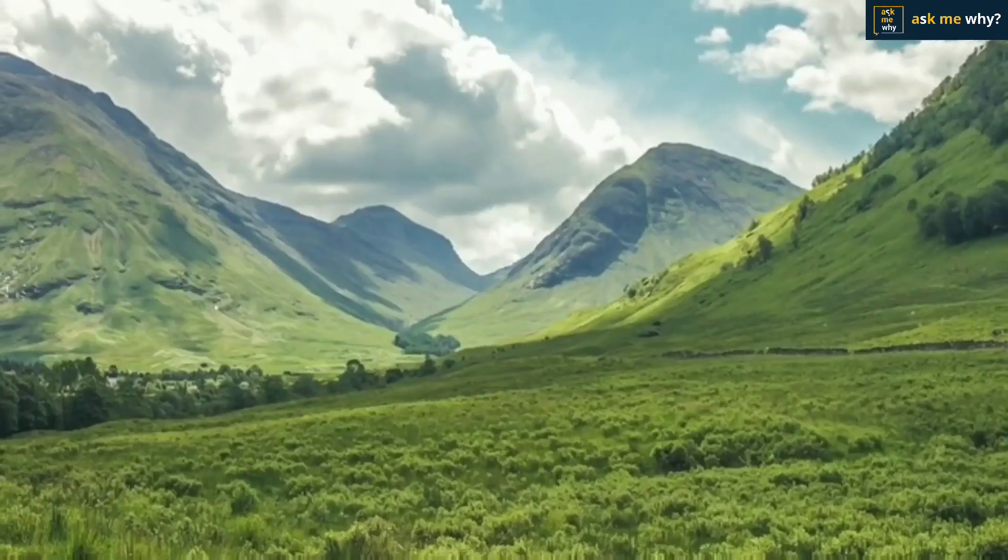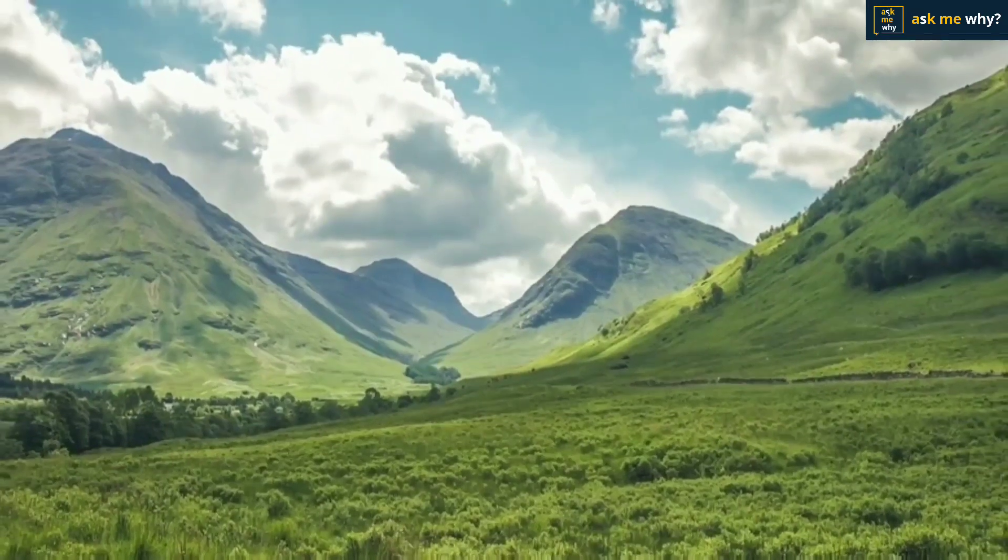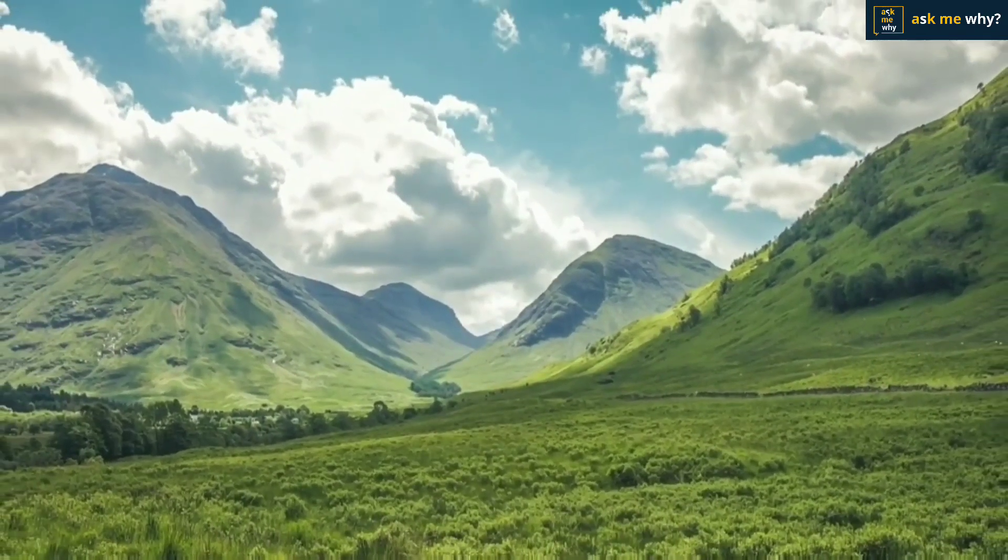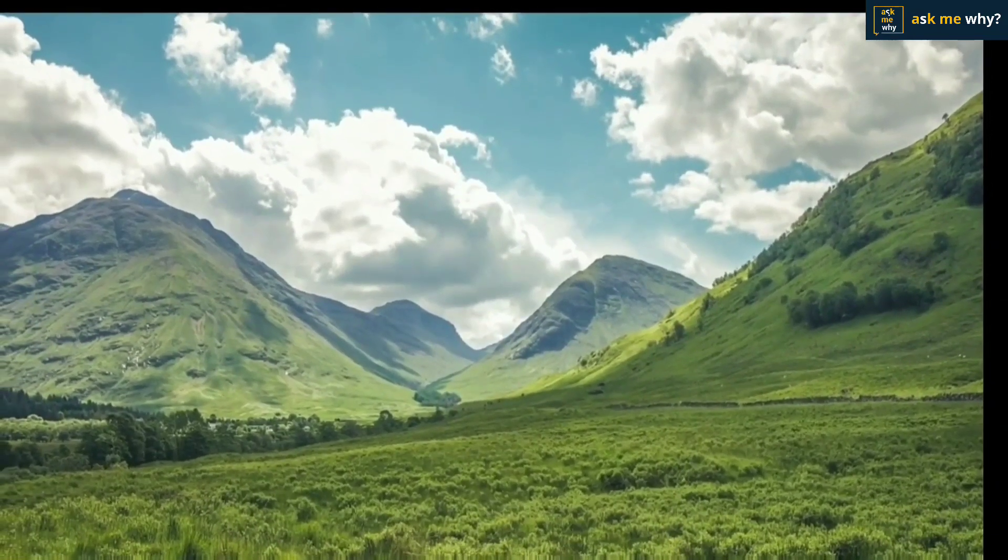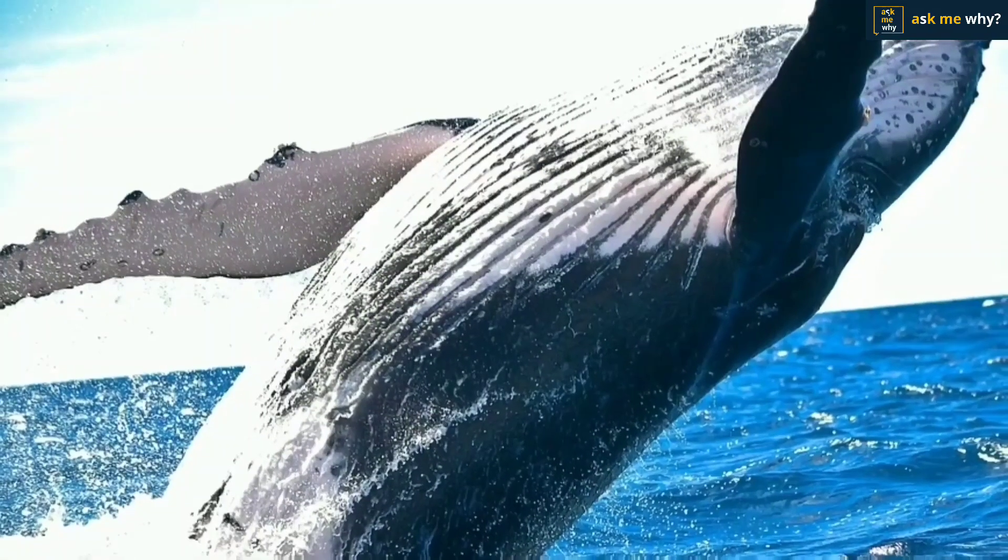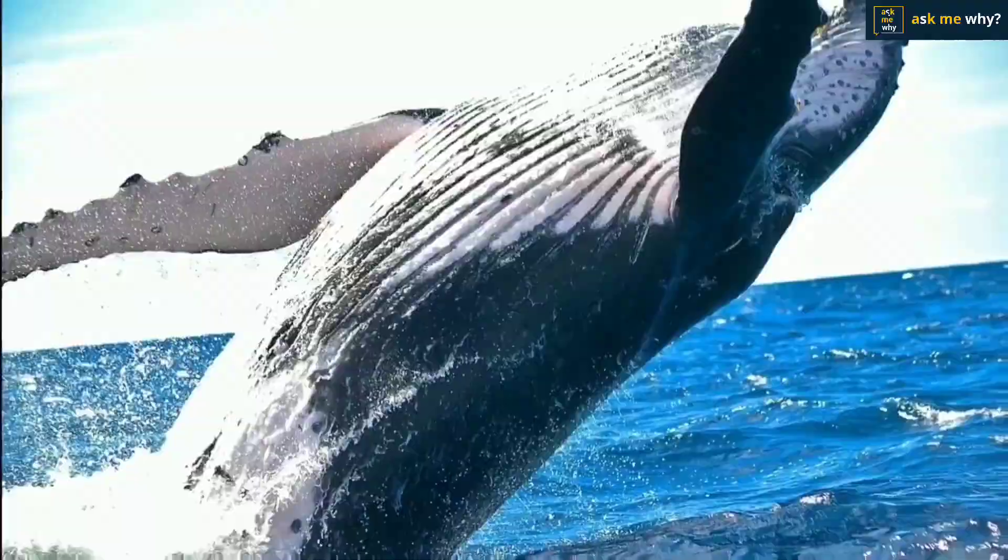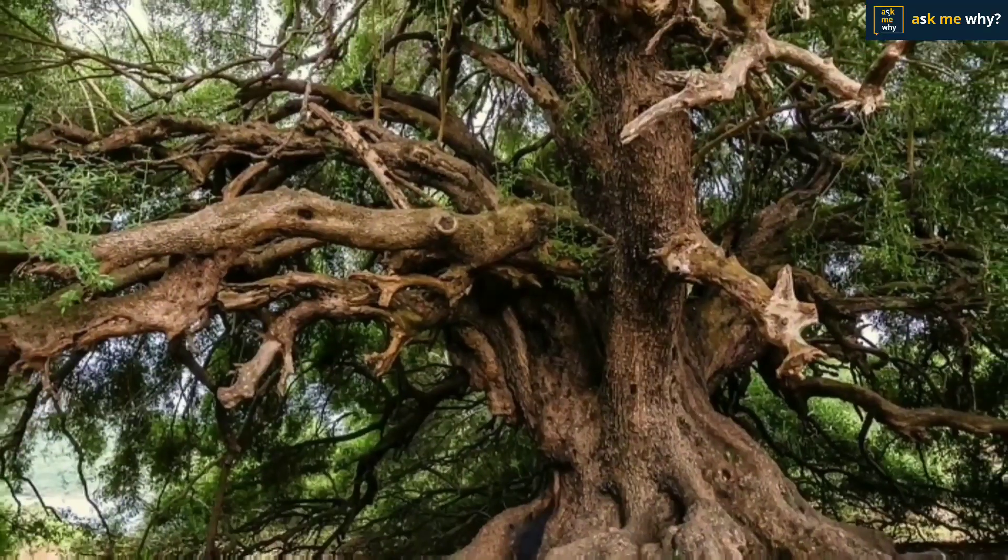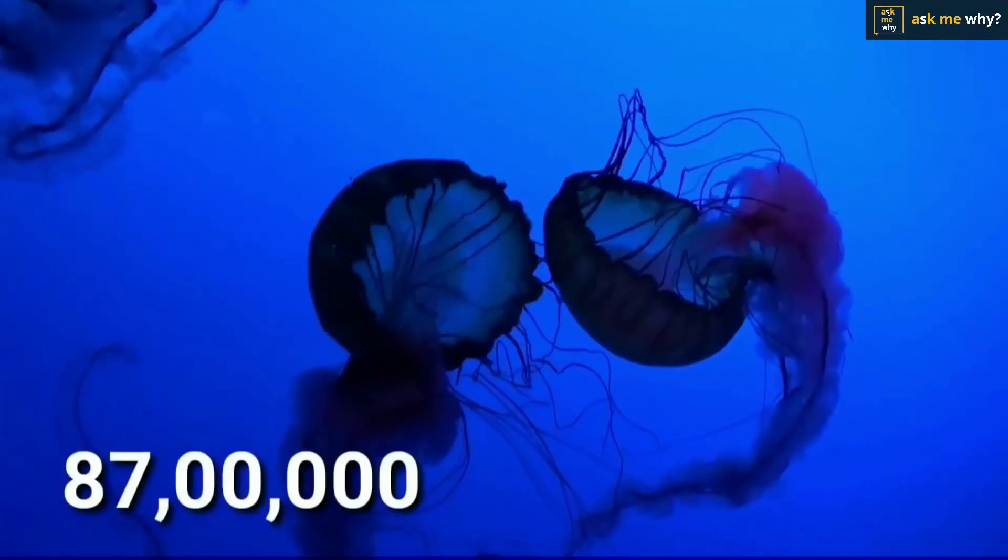Our planet is full of many creatures. From the depths of the deep sea to the high mountains, we will find at least one living thing. Our scientists have so far discovered about 13 million species of organisms, from invisible bacteria to blue whales weighing a few tons, from grass to large trees. It is estimated to be around 870,000 kinds of species.